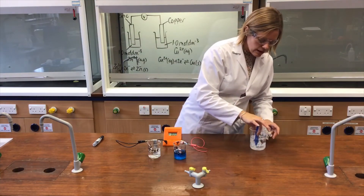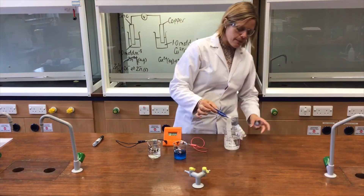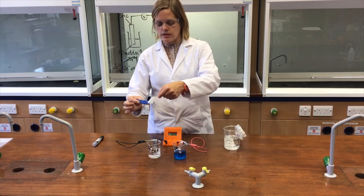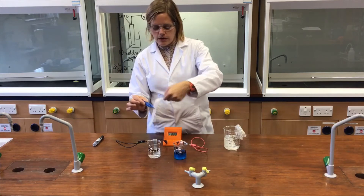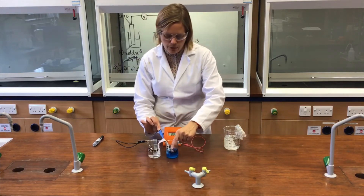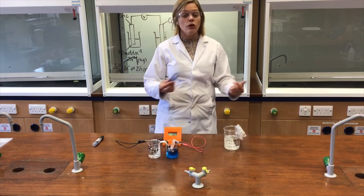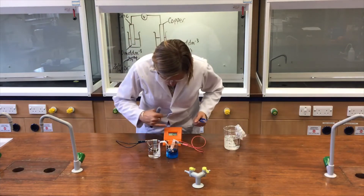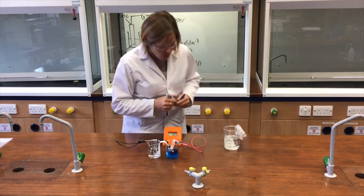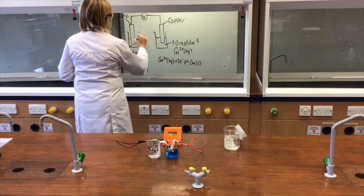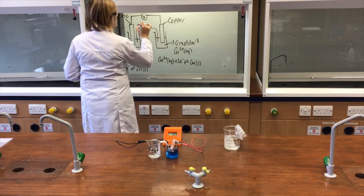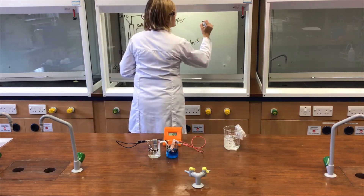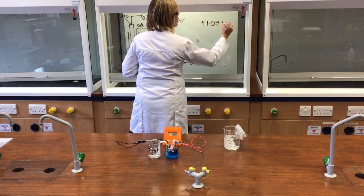A salt bridge is fairly straightforward — it's just a piece of filter paper that has been soaking in potassium nitrate solution overnight. I dip one end into one beaker and the other end into the other beaker. It allows ions to travel through it but not electrons, forcing electrons through the external circuit. The voltmeter now reads 1.09 volts — by adding the salt bridge to complete the circuit, I've measured a potential difference of plus 1.09 volts.